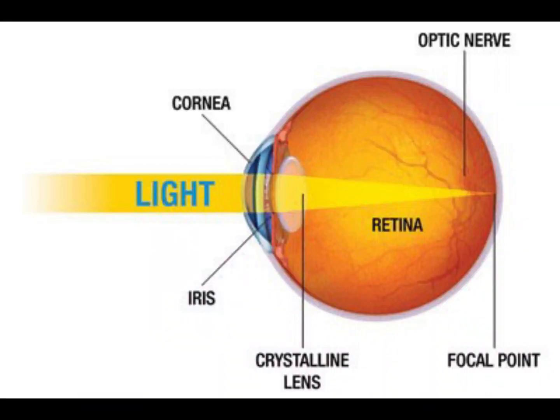Light rays then pass through a dense, transparent gel-like substance called the vitreous, which fills the globe of the eyeball and helps the eye maintain its spherical shape.